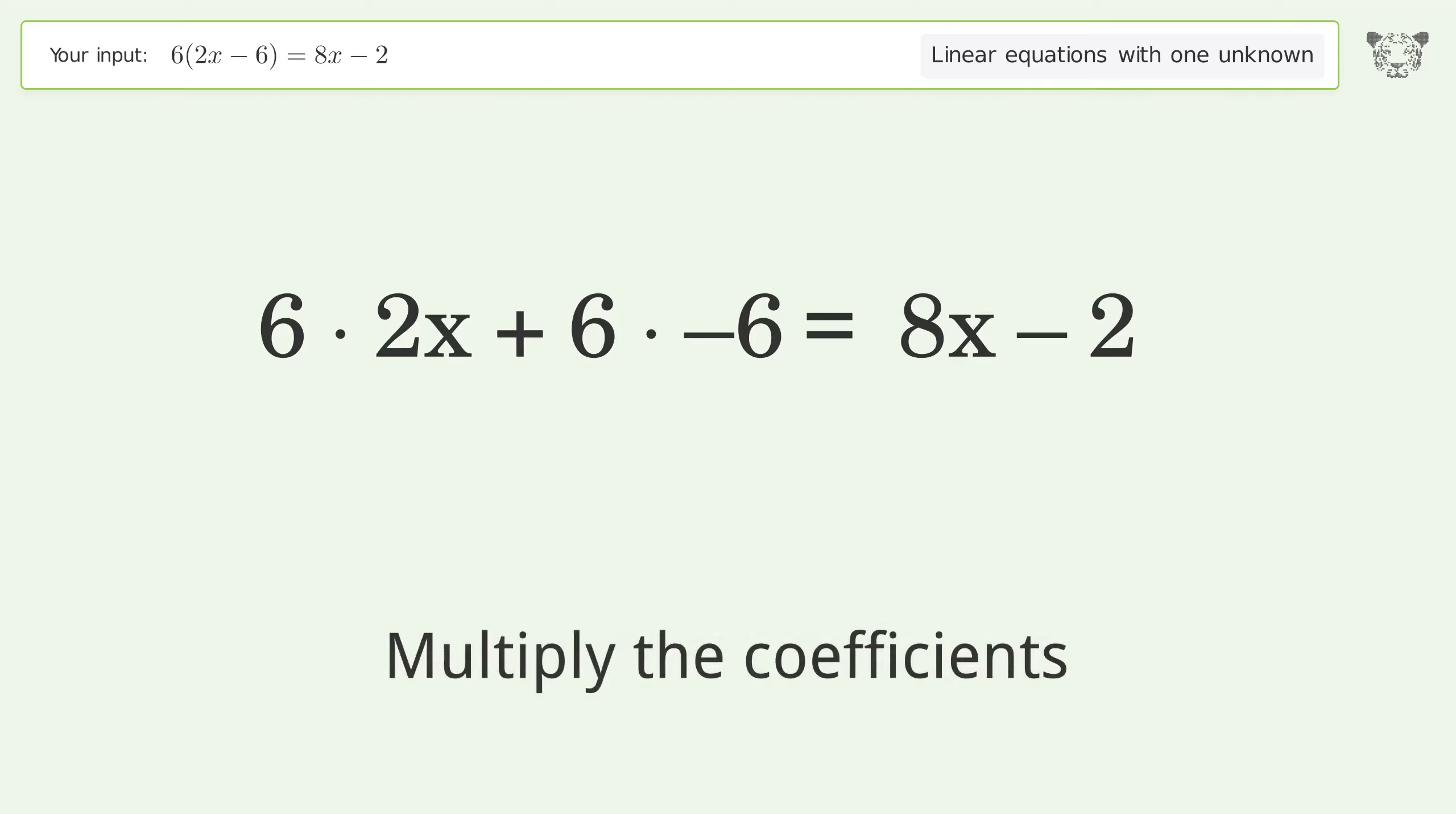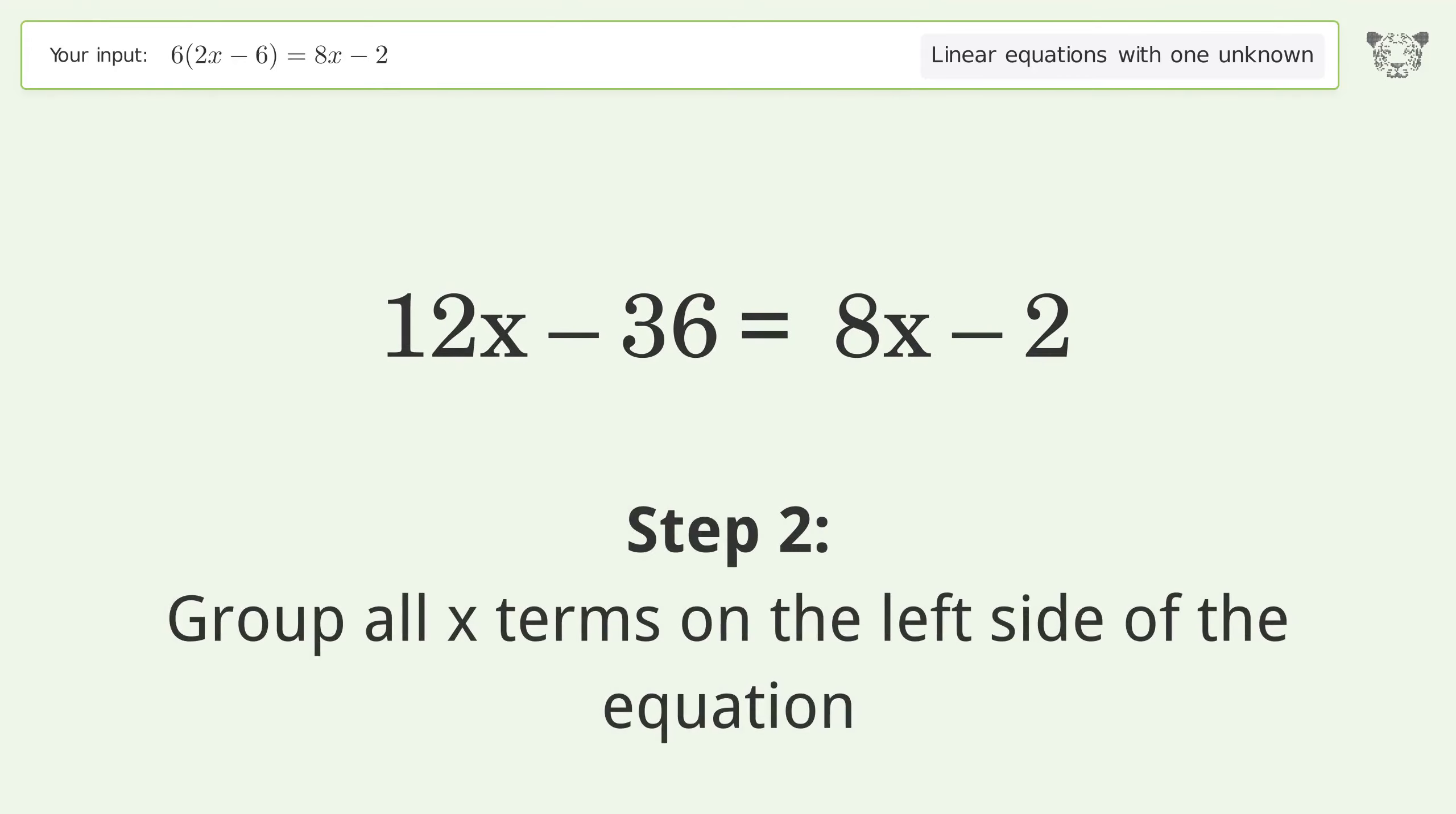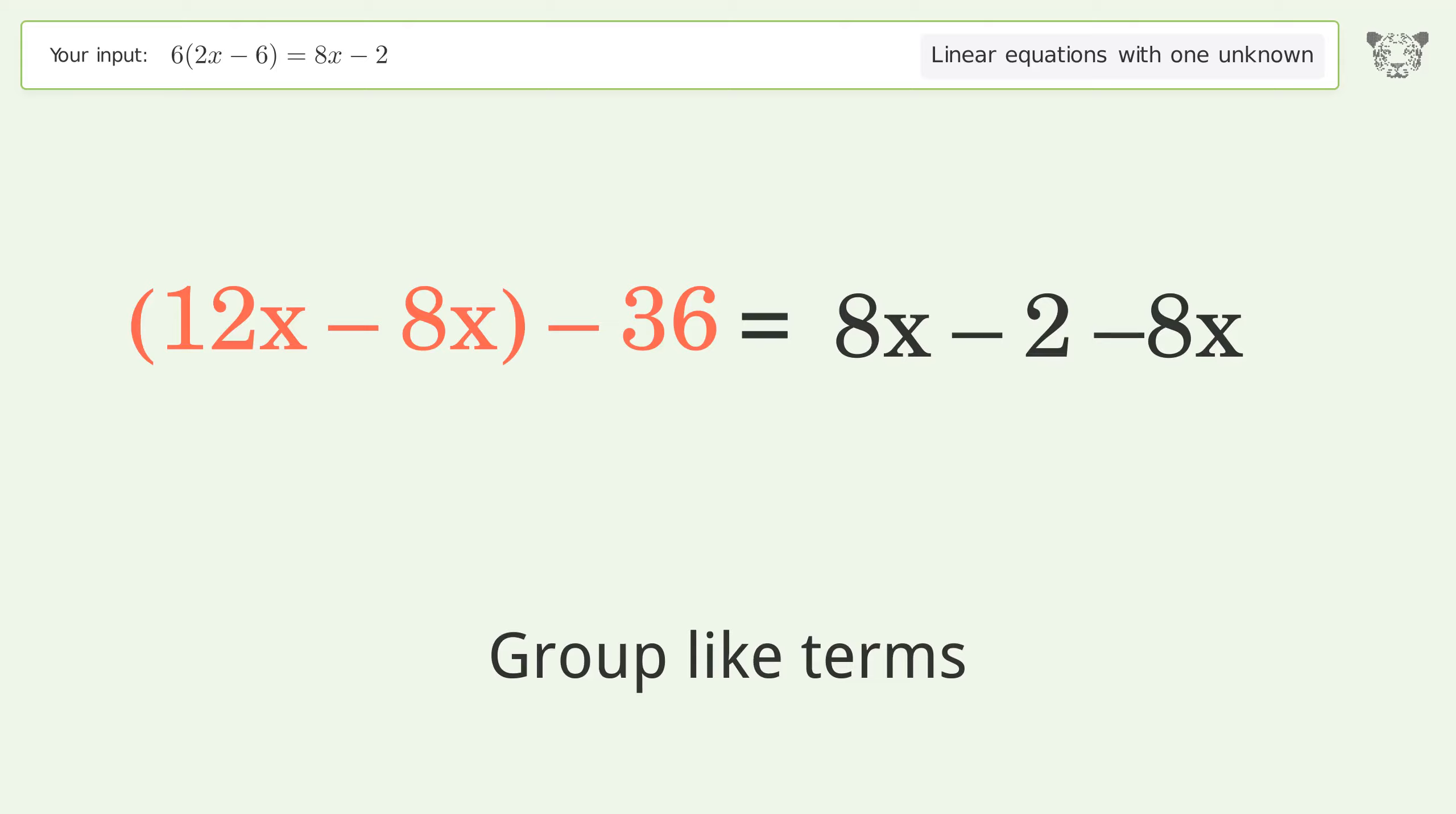Multiply the coefficients. Simplify the arithmetic. Group all x terms on the left side of the equation by subtracting 8x from both sides. Group like terms, then simplify the arithmetic.